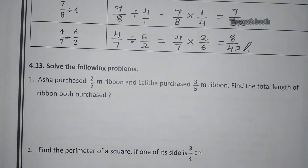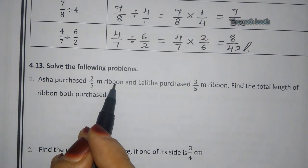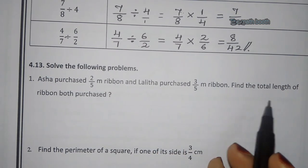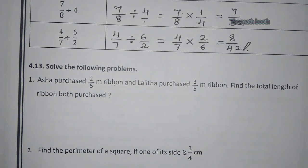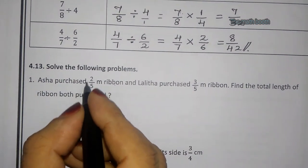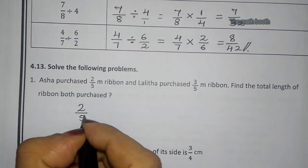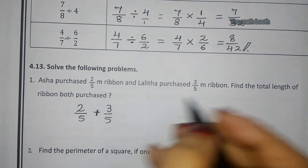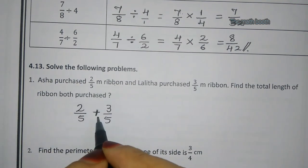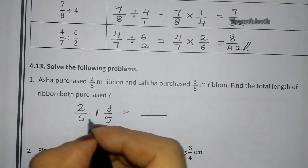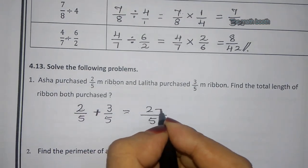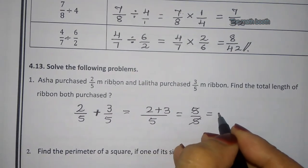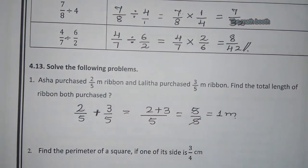Word problem: Asha purchased 2/5 meter ribbon and Lalita purchased 3/5 meter ribbon. Find the total length of ribbon both purchased. Since the denominator is the same, we keep it as is: 2/5 + 3/5 = 5/5. The 5s cancel and the answer is 1. So both of them purchased 1 meter of ribbon.